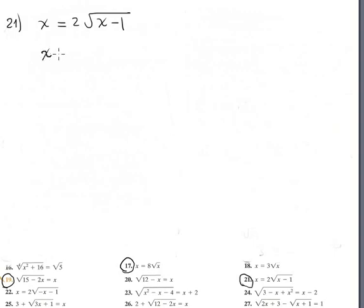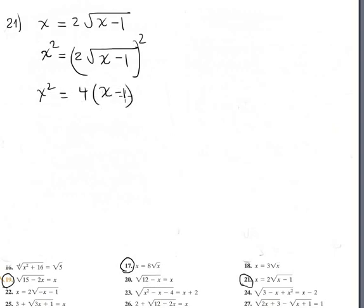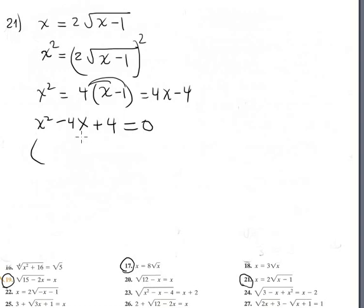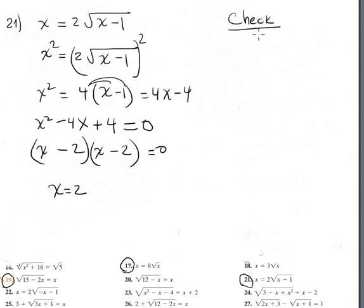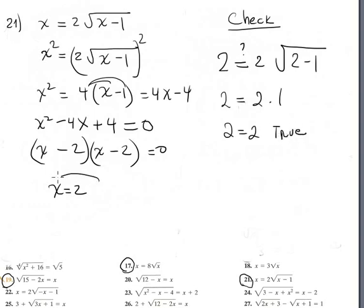Number 21: copy the equation and square both sides. Left side gives x squared; right side is 4 times (x minus 1), applying the distributive property to get 4x minus 4. The equation becomes x squared minus 4x plus 4 equals 0. Factoring: the combination is 2 and 2 (since 2 times 2 is 4 and 2 plus 2 is 4), both negative. The only solution is x equals 2. Checking: 2 should equal 2 times square root of (2 minus 1), which is 2 times square root of 1, which is 2 times 1 equals 2 — it's true. The answer x equals 2 is correct.